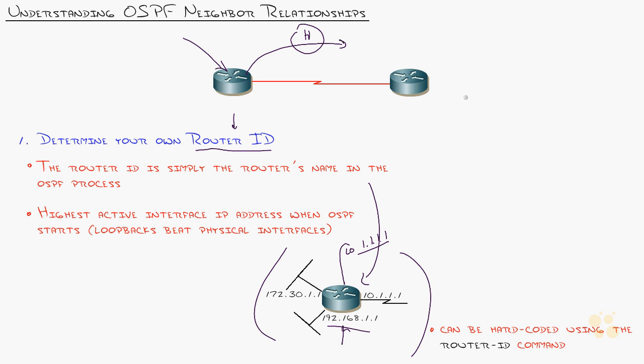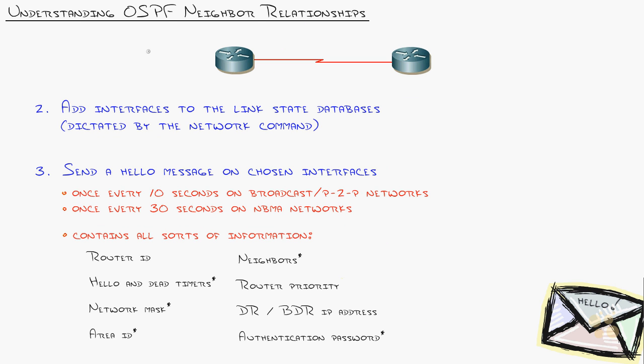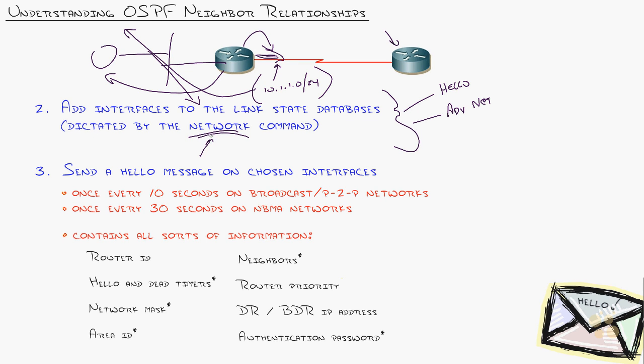Rule number one: the name must be unique in the entire OSPF topology. If a router isn't forming a neighbor relationship, it may be a duplicated router ID. Once the router has chosen its router ID, it starts adding interfaces to the link state database based on which ones you've identified using the network command. Two things happen: first, it starts sending hello messages on that interface, and second, it advertises that network. If this is the 10.1.1.0 network, it will send hello messages to form a neighbor and advertise this network to other routers.